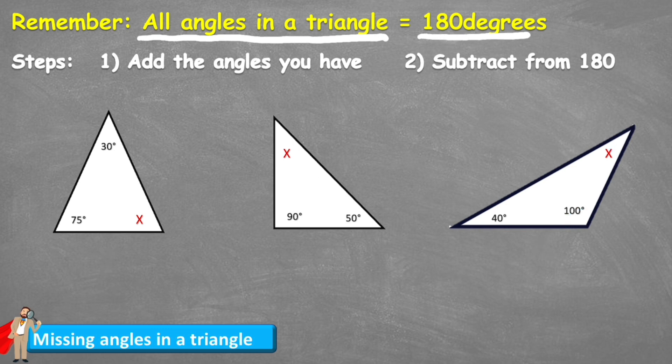So how are we going to work out this missing angle? Well we're going to follow these steps. Step one says to add the angles that we already have and then step two says we're going to subtract that from the 180 total that we know it is.